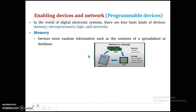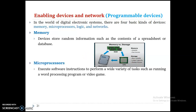The second device is the microprocessor, which is used to execute software instructions. One of the main advantages of a microprocessor is executing software instructions. Because of that, we can say the microprocessor is the brain of a computer, or we call it the central processing unit. It is used to perform a wide variety of tasks.